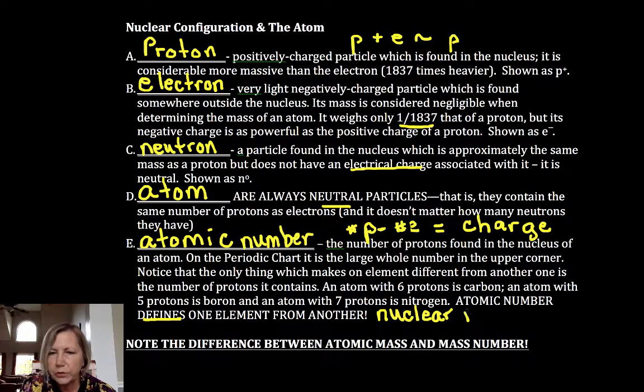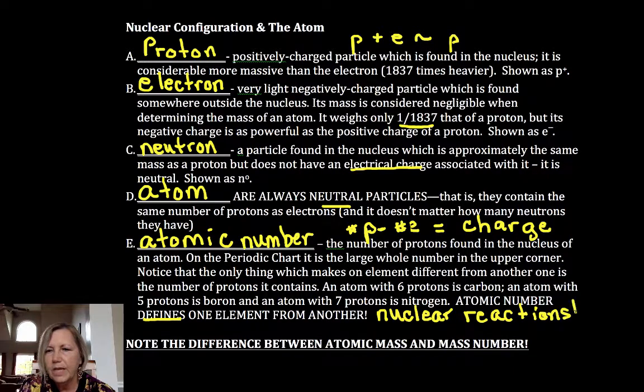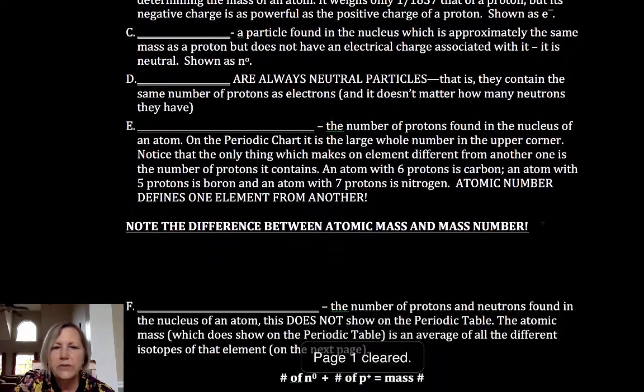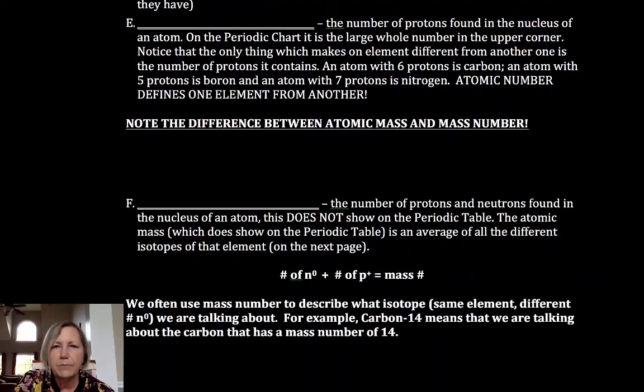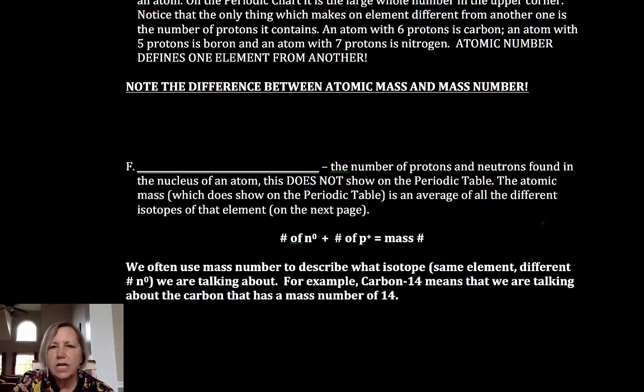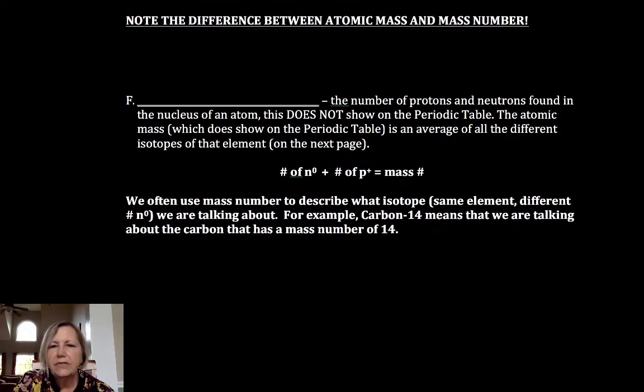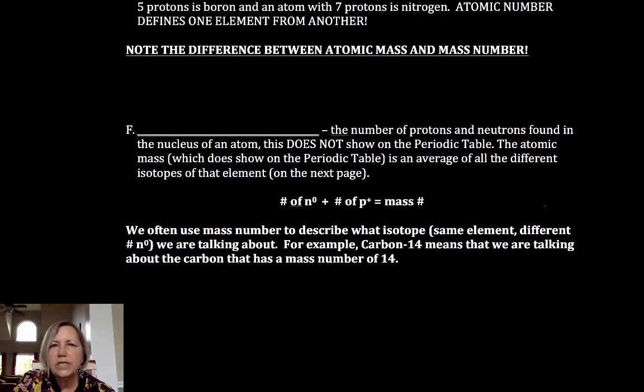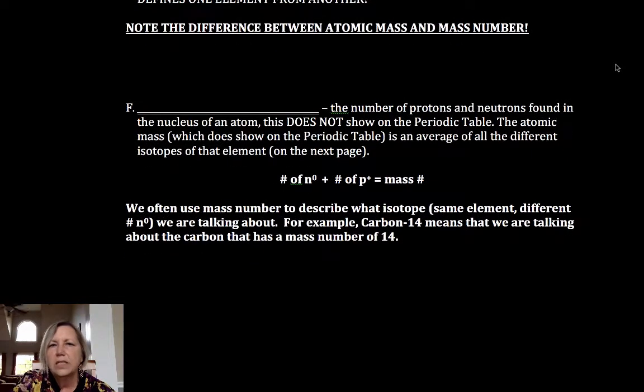If you change that atomic number, we're talking about nuclear chemistry or nuclear reactions as opposed to chemical reactions. Now there's another one and I want you to note the difference between these two as I talk about them. We're going to talk about two types of masses: atomic mass and mass number.